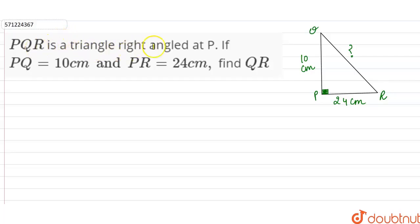PQR is a triangle right angled at P. If PQ is equal to 10 centimeter and PR is equal to 24 centimeter, find QR. In the question it is given that PQ is 10 centimeter, PR is 24 centimeter, right angle is at P, and we have to find the hypotenuse.